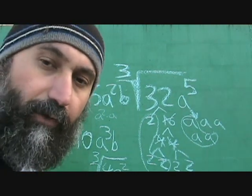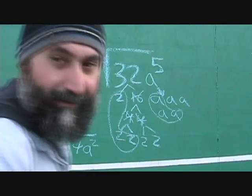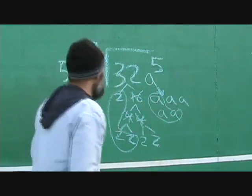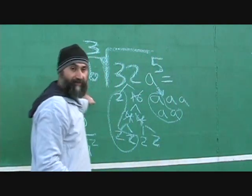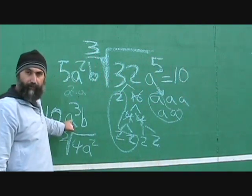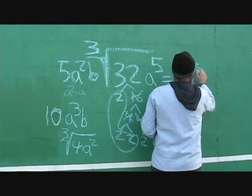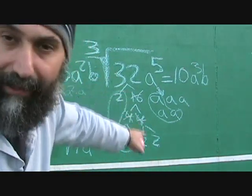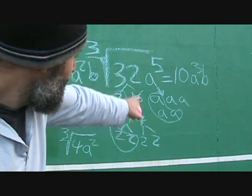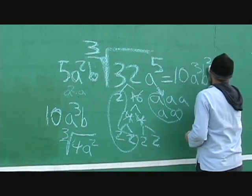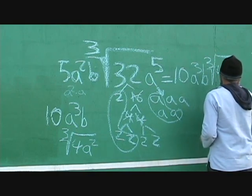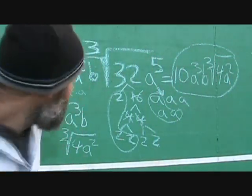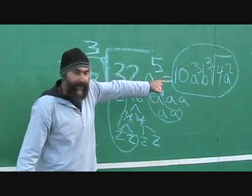I hope that makes sense — we're a little off the board, so I had to move the camera. We're going to write the answer right after the question. Two times five was ten, a³ because we had a² and an a came out, and you still had your B. What's left inside the radical: two times two is four, and a times a is a². So the answer is 10a³b times the cube root of 4a².